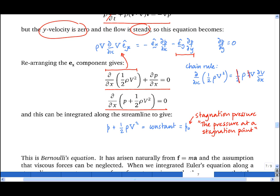When you add a gravitational body force to the analysis, then an extra term appears, which is plus rho gz, where z is the height above an arbitrary point, known as a datum level.